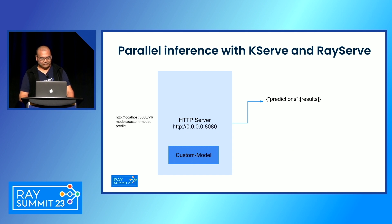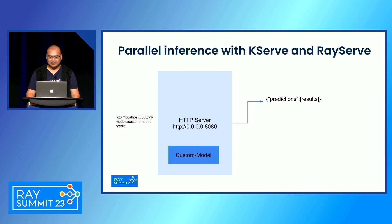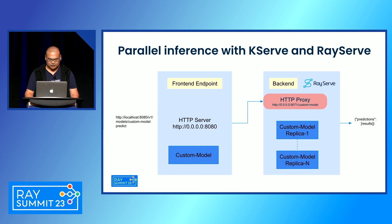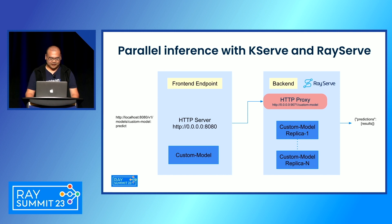By default, when you launch a KServe custom model serving runtime, it loads the model and runs the prediction in the same process as the HTTP server, so inference also happens inside that same process. That's why we need to enable Ray-Serve. When you enable Ray-Serve, KServe launches a Ray-Serve instance so models are deployed as multiple replicas, enabling parallel inference when serving multiple requests.